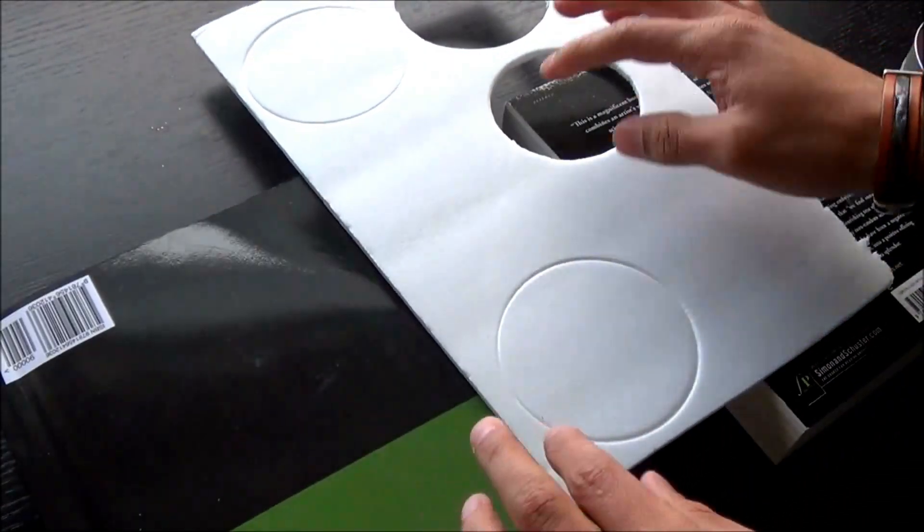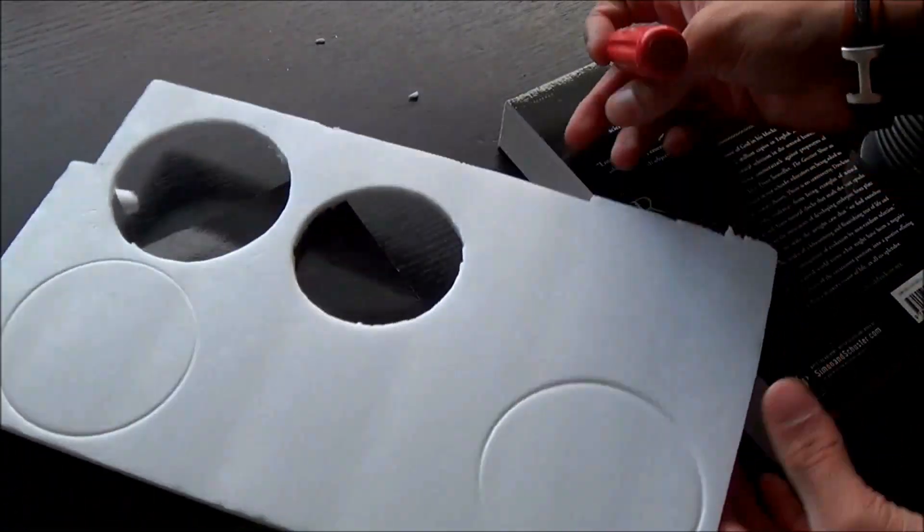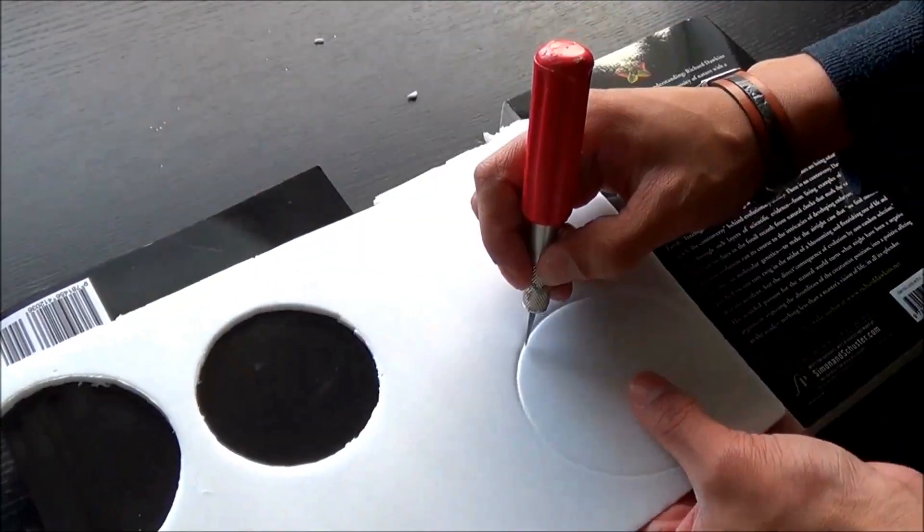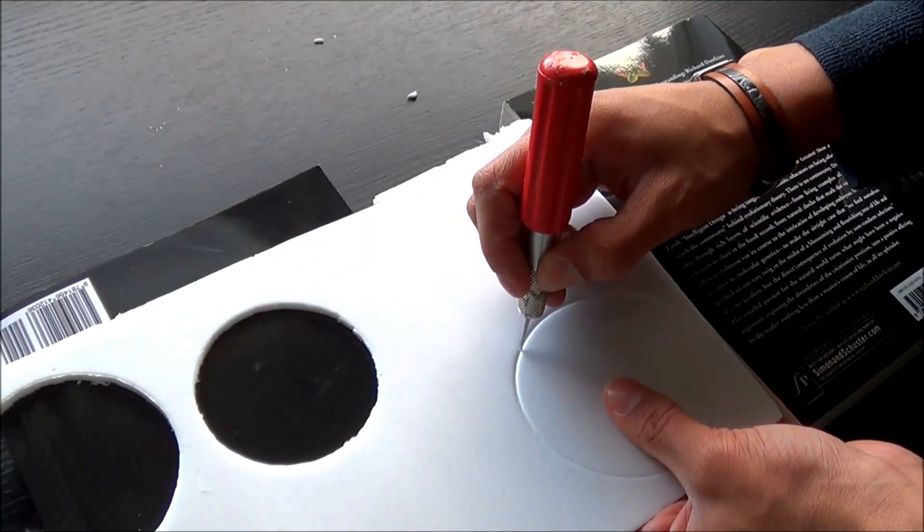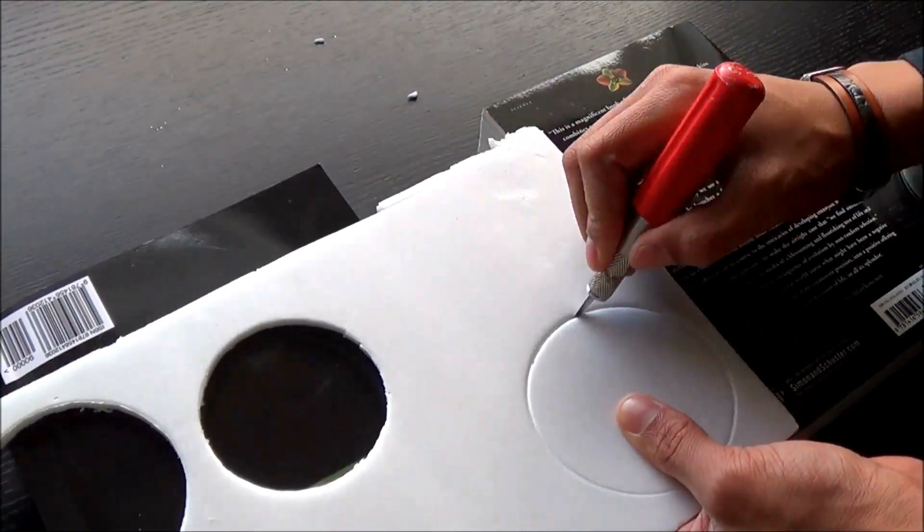I'm going to prop it up on books or something else and cut it out with the exacto knife. This here is going to be one wheel and you're going to have to cut out four of these so that we can have four wheels for the car. You can see me fast forward through cutting out this wheel.